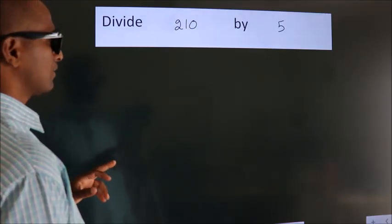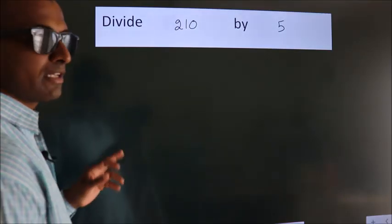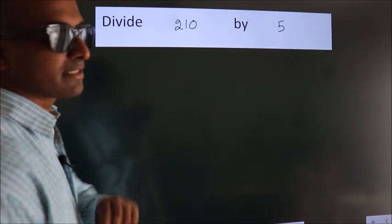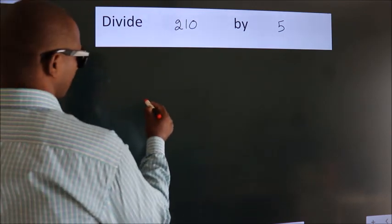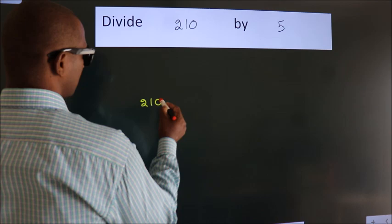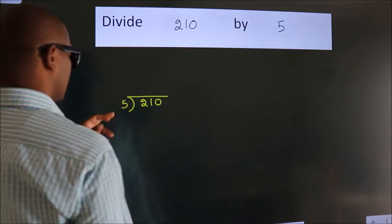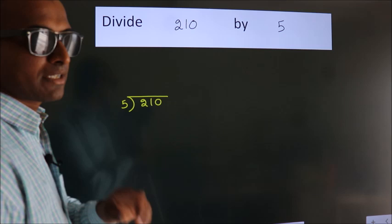Divide 210 by 5. To do this division, we should frame it in this way. 210 here, 5 here. This is your step 1.